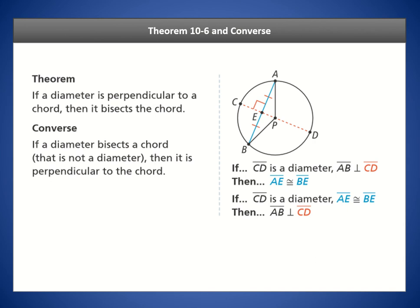Theorem 10-6 states that if a diameter is perpendicular to a chord, it bisects that chord — the diameter serves as a perpendicular bisector. The converse states that if a diameter bisects a chord, it must be perpendicular — at 90 degrees — to that chord.